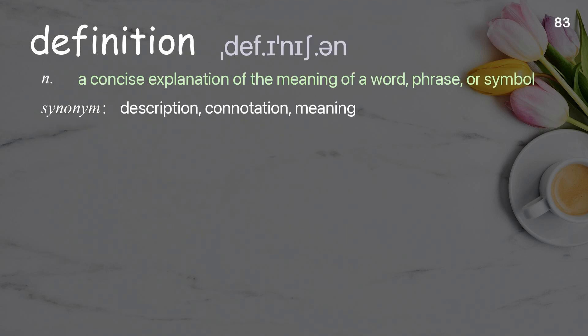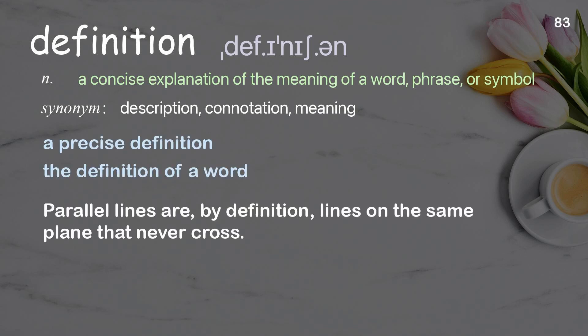Definition: A concise explanation of the meaning of a word, phrase, or symbol. Examples: a precise definition, the definition of a word. Parallel lines are, by definition, lines on the same plane that never cross.